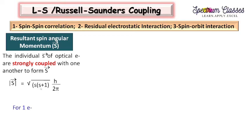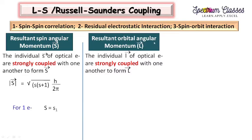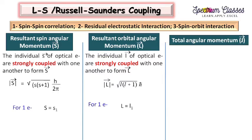For one electron, this resultant is equal to S1 - which is one half for one electron. The next is the resultant orbital angular momentum vector L. The individual vector L of optical electrons are strongly coupled with one another to form capital vector L. For one electron, capital L is equal to L1. The third one is total angular momentum from spin-orbit coupling. As a result of spin-orbit interaction of vector L and vector S - where vector L is the resultant orbital angular momentum and vector S is the resultant spin angular momentum - these are less strongly coupled to form total angular momentum vector J.